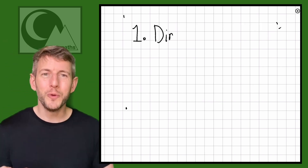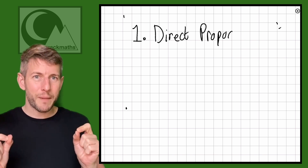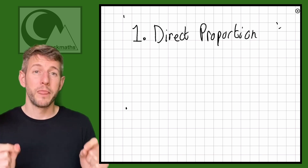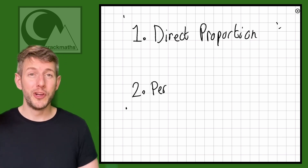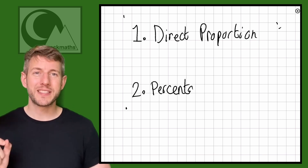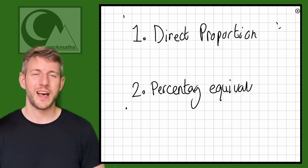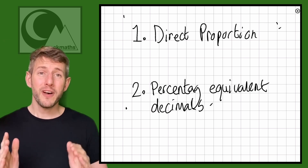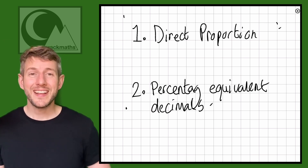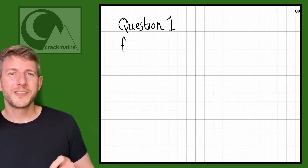First of all we're going to look at direct proportion, and then after that we're going to look at using percentage equivalent decimals as multipliers. So first of all let's take a look at direct proportion.